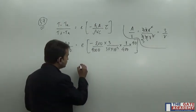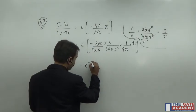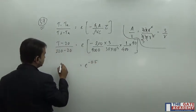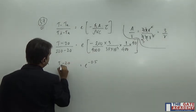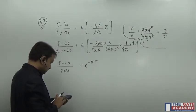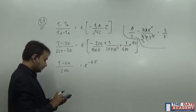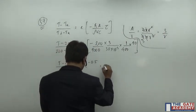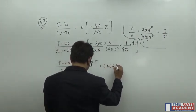So I am getting e to the power minus 0.5 after solving everything. And here I get T minus 20 divided by 220, so it is going to be 200. And e to the power minus 0.5 is 0.60653.